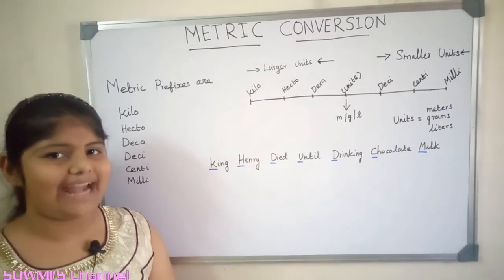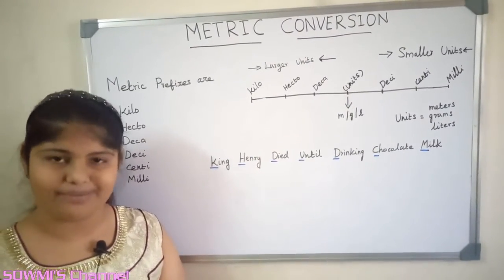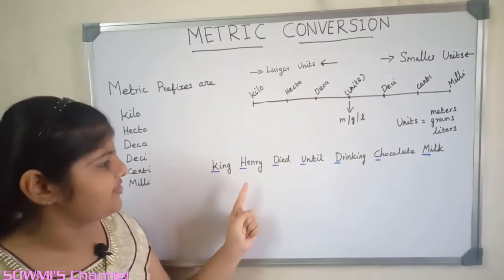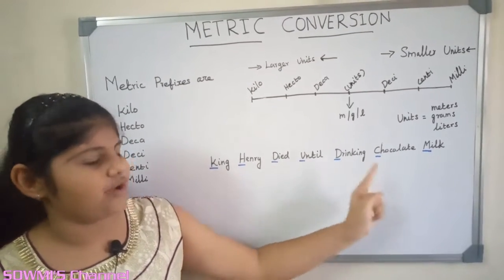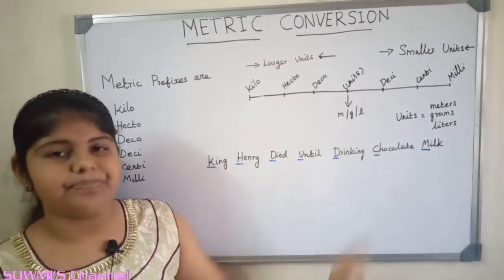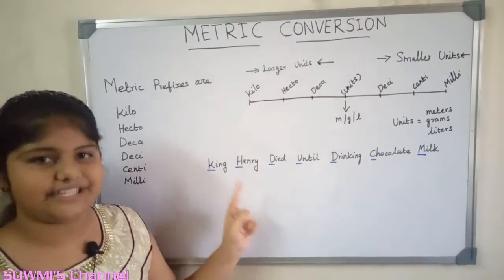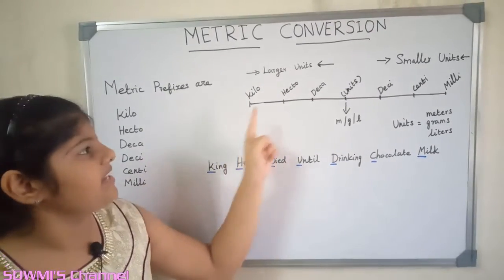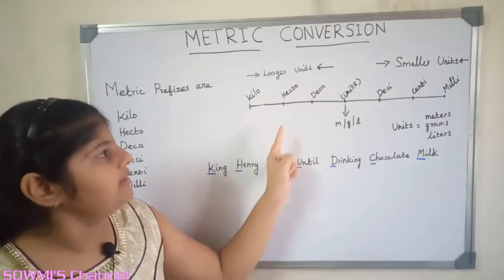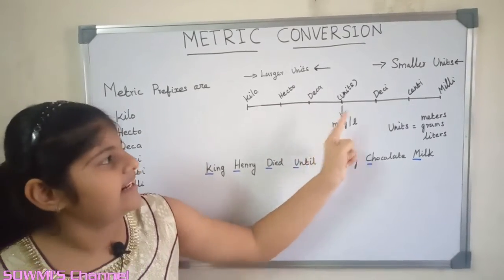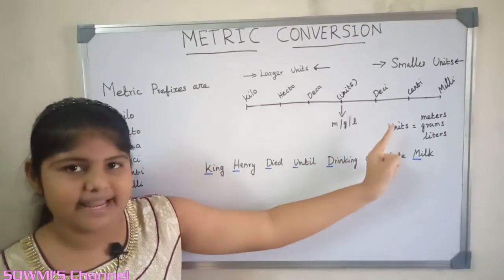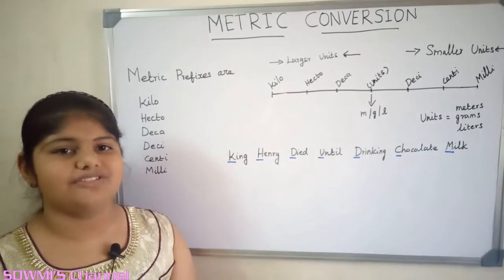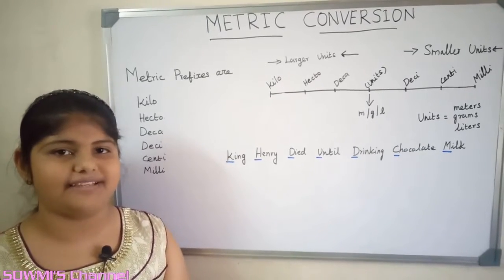There is an easy handy trick for remembering these prefixes: King Henry died until drinking chocolate milk. The first letter of each word represents kilo, hecto, deca, units, desi, centi, and milli. This trick helps to memorize the prefixes.